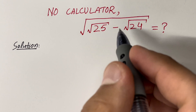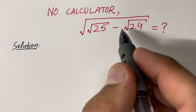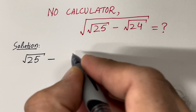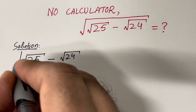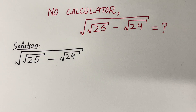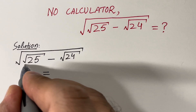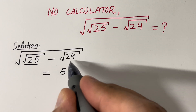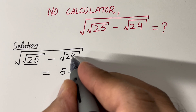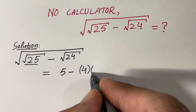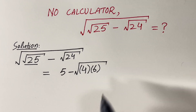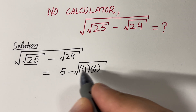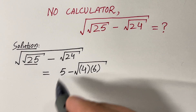Let's simplify this problem. First, let's rewrite it: we have the square root of 25 minus the square root of 24, all under another square root on top. Now, square root of 25 is 5. For square root of 24, we can write it as square root of 4 times 6, because 4 times 6 is 24 — we've just factored the 24.